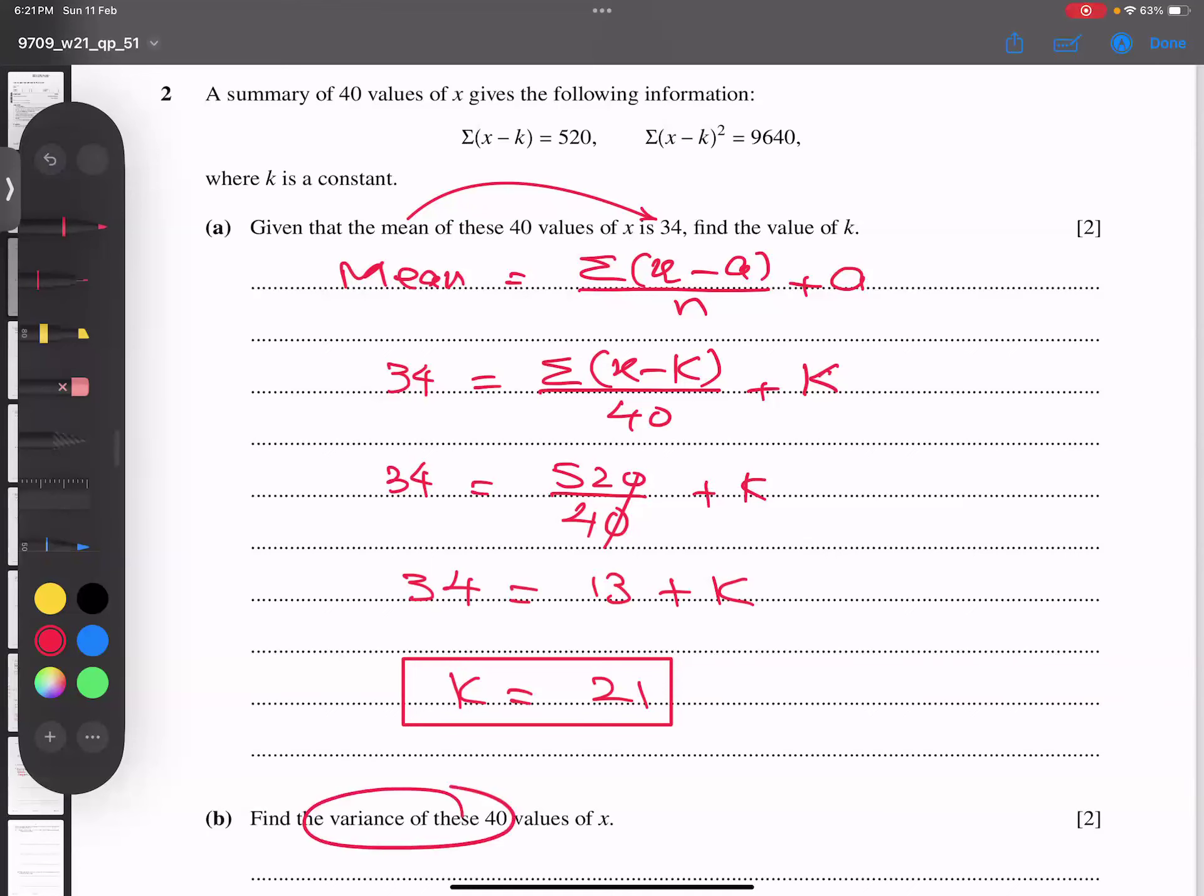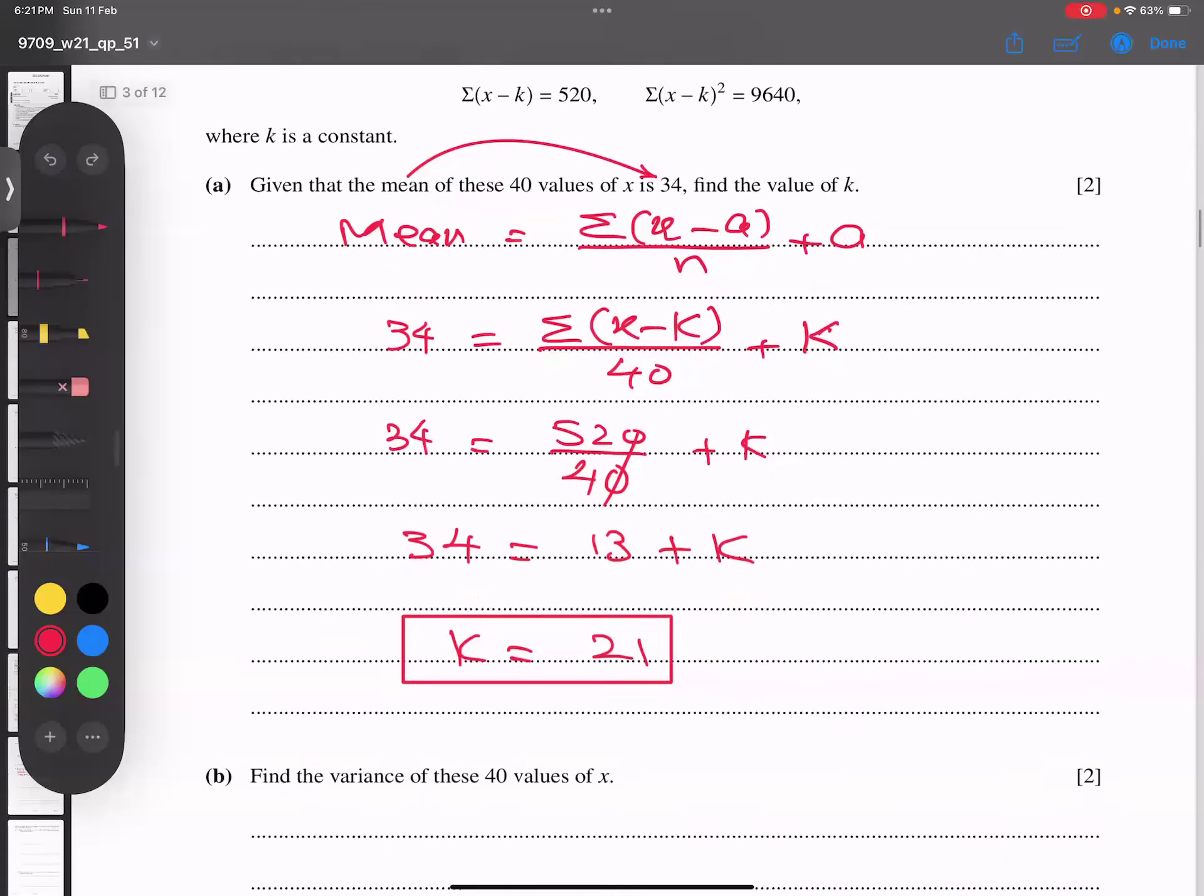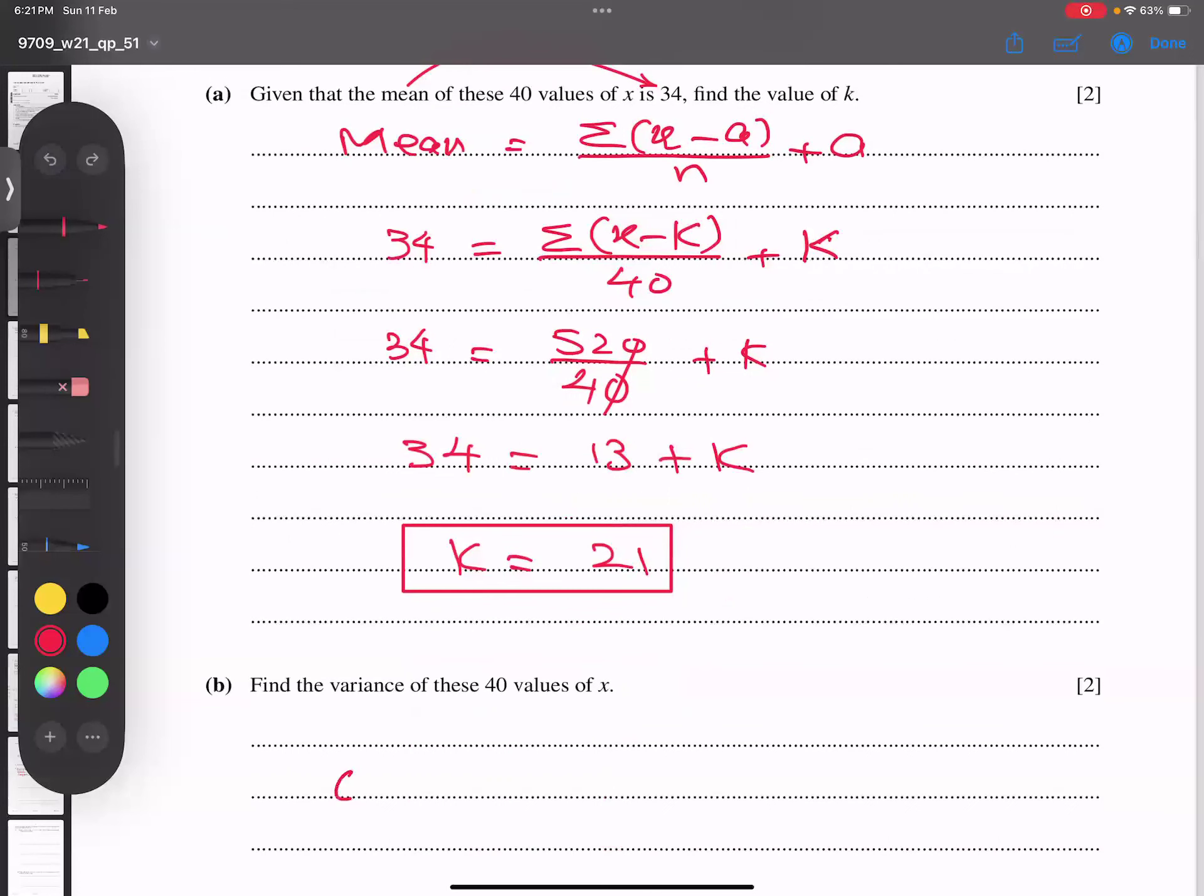Now he asks for the variance. First, as usual, write the variance formula. The standard deviation formula is the square root of sigma x minus a whole square by n minus the square of sigma x minus a by n. But if you square it, this is called variance.